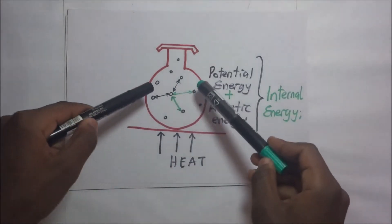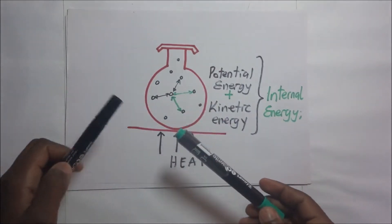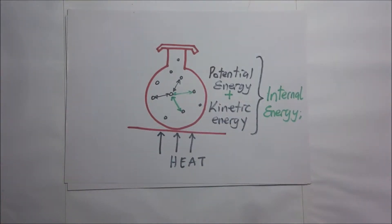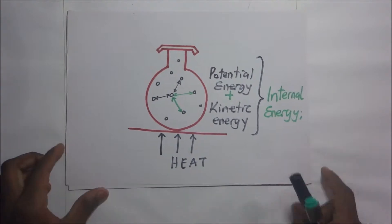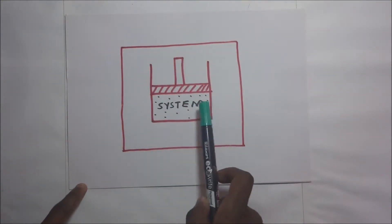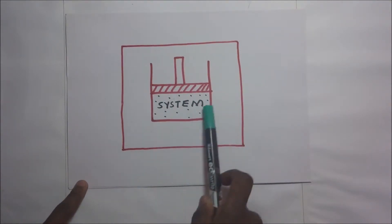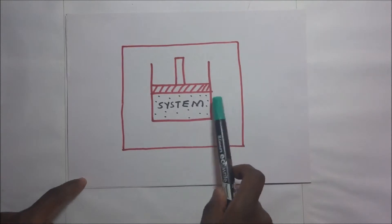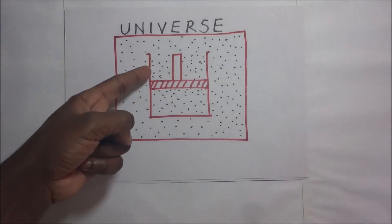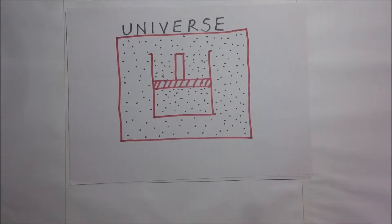We shall refer to the internal energy of this gas, or we may call it the system. The gas itself is what we are calling the system — it is simply the language we use in thermodynamics. Diagrammatically, this is a gas strapped into a container with a piston; the gas is what we refer to as the system. What is outside is what we call the surrounding — whatever is surrounding the gas. The system and the surrounding are separated by a wall or boundary, and together the system and surrounding comprise what we call the universe.